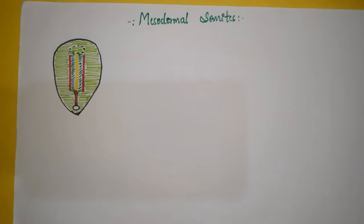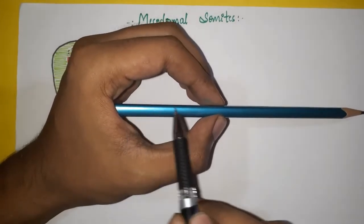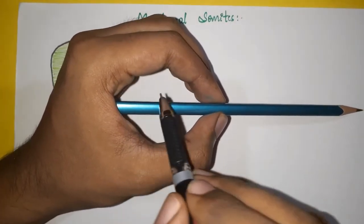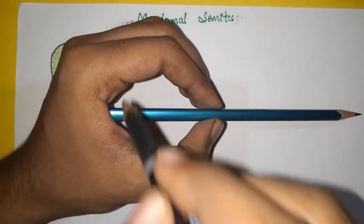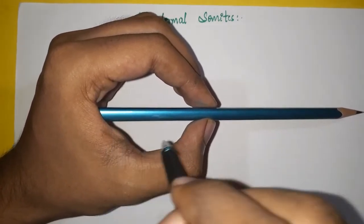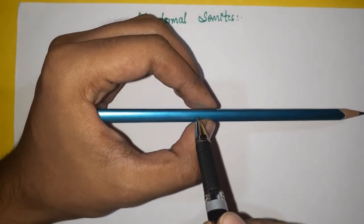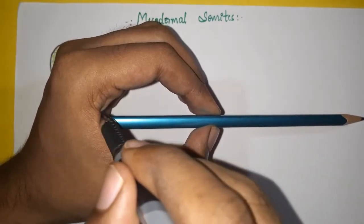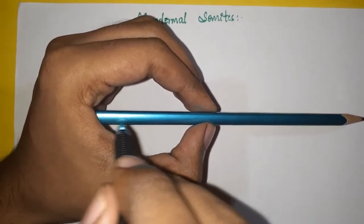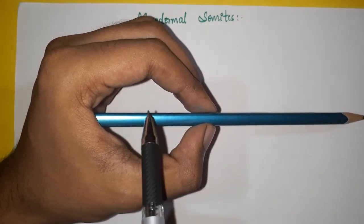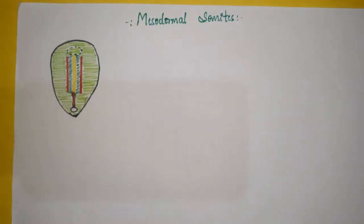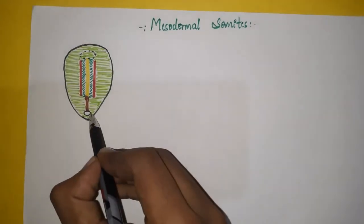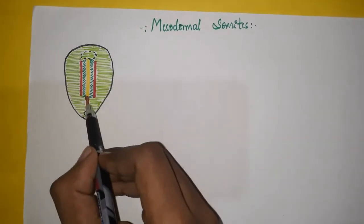Before starting discussing the mesodermal somites, you should know some basics. Here this is the embryonic disc, this is the amniotic cavity, and this is the yolk sac. The amniotic cavity is lined by ectoderm, the yolk sac is lined by endoderm, and there is presence of mesoderm in between. This is the cloacal membrane, this is the prechordal plate, and this is the primitive streak with primitive knot.